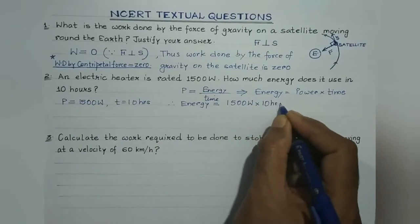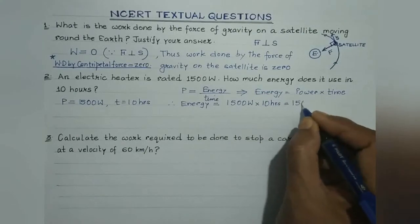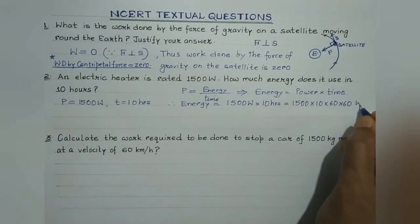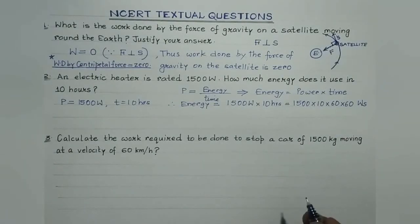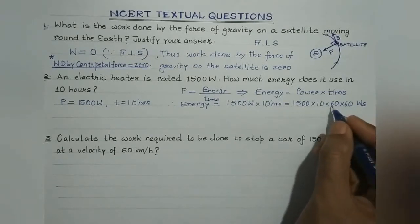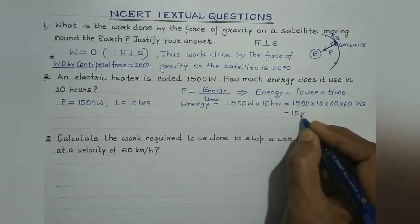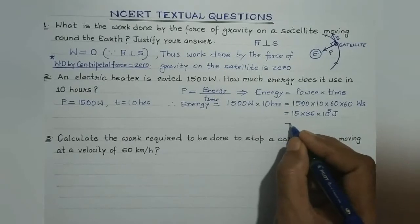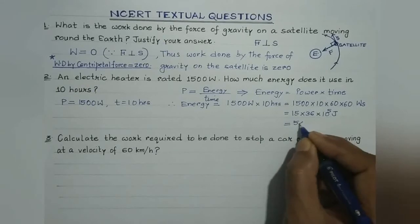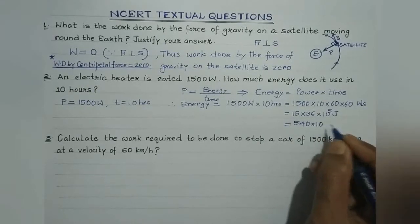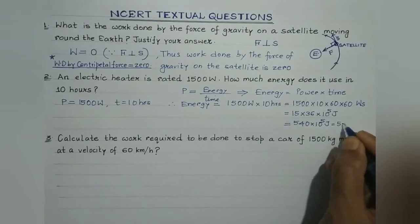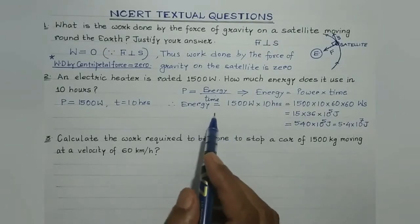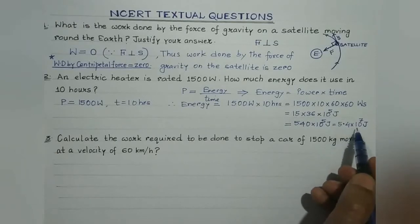Time is 10 hours. Don't forget to convert it to seconds: 1500 multiplied by 10, and 1 hour is 60 minutes, each minute is 60 seconds, so the unit will be watt-second, which is joules. This gives us 15 multiplied by 36 multiplied by 10 raised to the power 5 watt-seconds, which equals 540 into 10 raised to power 5 joules, or 5.4 multiplied by 10 raised to power 7 joules. So the energy consumed is 5.4 × 10⁷ joules.